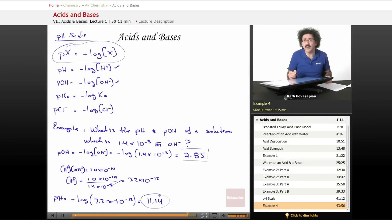11.14 pH, 2.85 pOH. Notice something. What is 11.14 plus 2.85? Yeah, you guessed it, it's about 14. Now let's explain why.